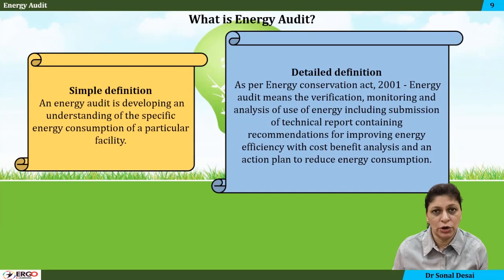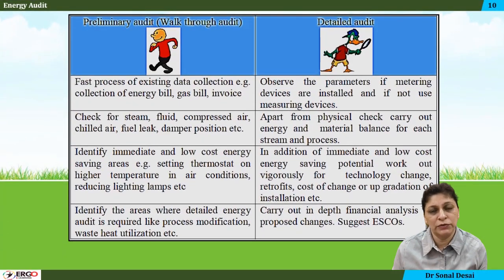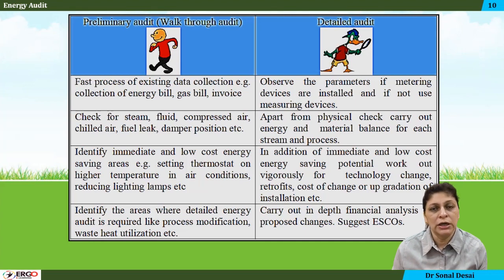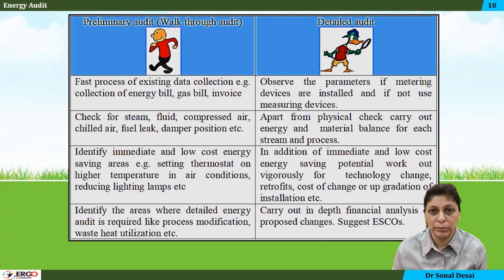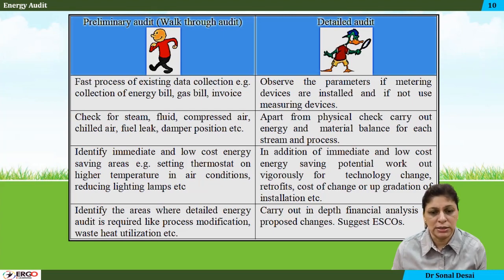Definitions of energy audit are provided, along with differentiation between types of audit — such as a detailed audit versus a walkthrough audit. A walkthrough audit involves going through the plant and identifying certain losses, while a detailed audit involves a thorough review of energy consumption processes, collecting bills, and measuring certain parameters. The total methodology is discussed.